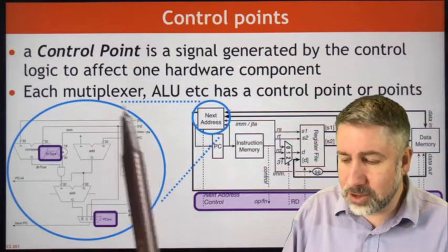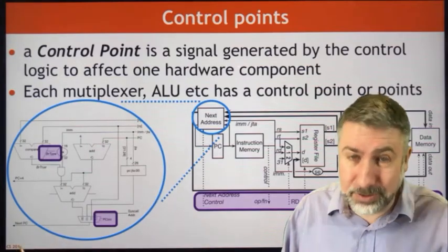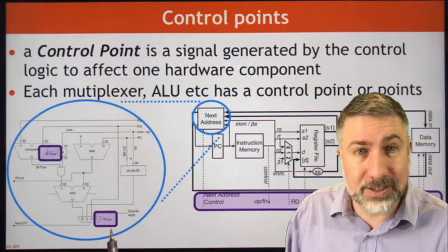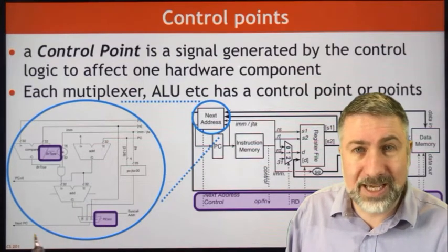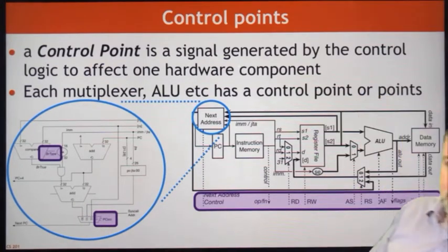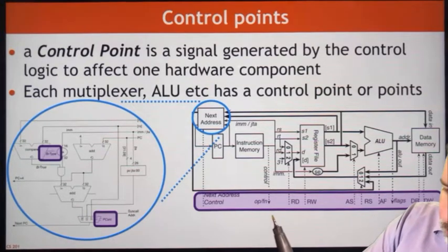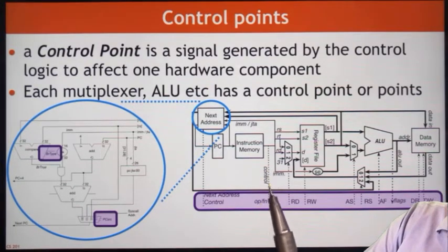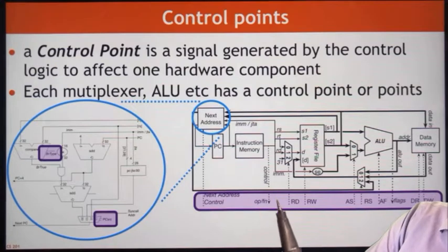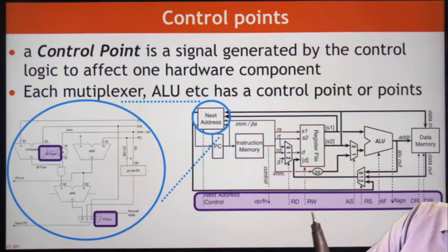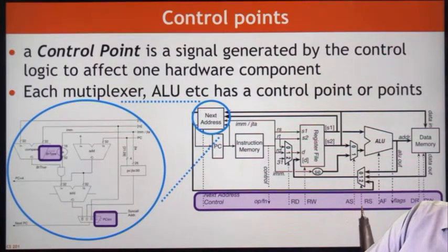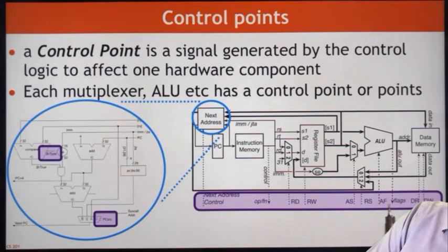The control points we have include: BR type (2 bits) and PC source (2 bits) from the branch hardware built in the previous video, plus the opcode and function as inputs to the control logic specifying the destination register RD multiplexer, whether the register file is writing, the ALU source multiplexer, the destination register file source multiplexer, the ALU function, and data memory read/write.